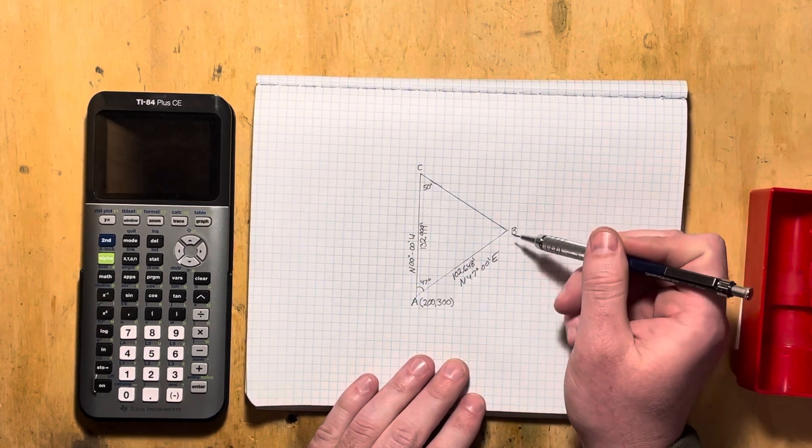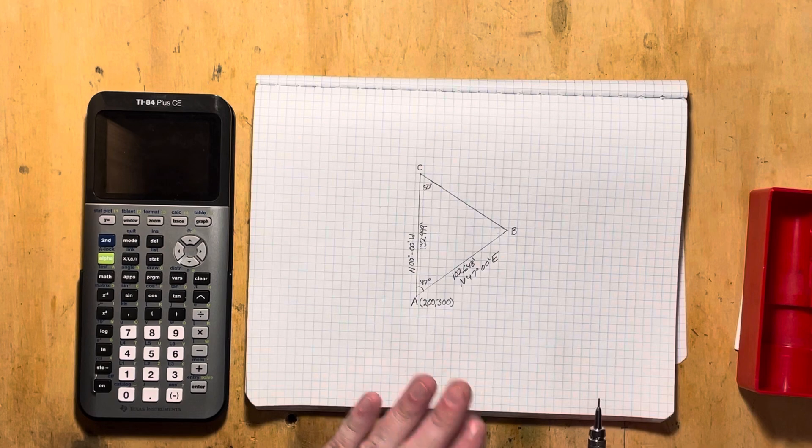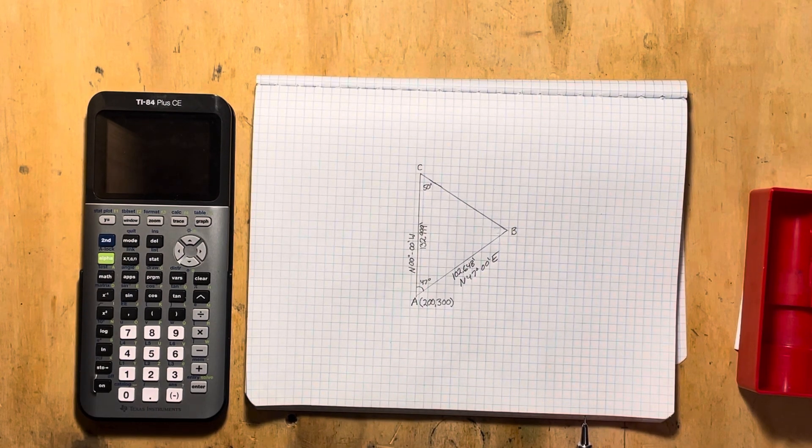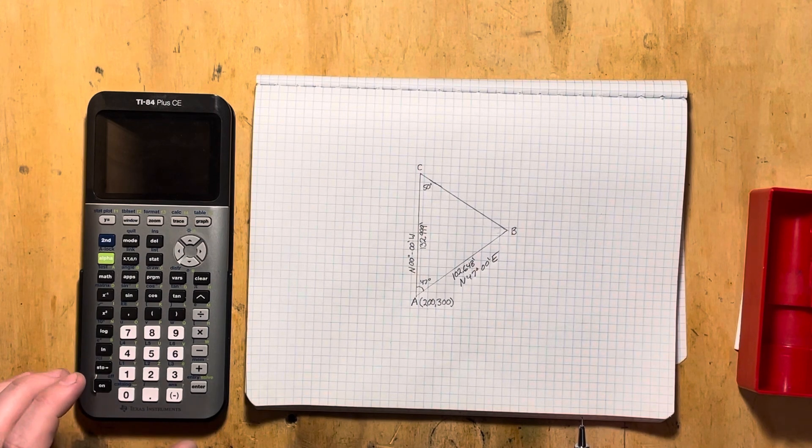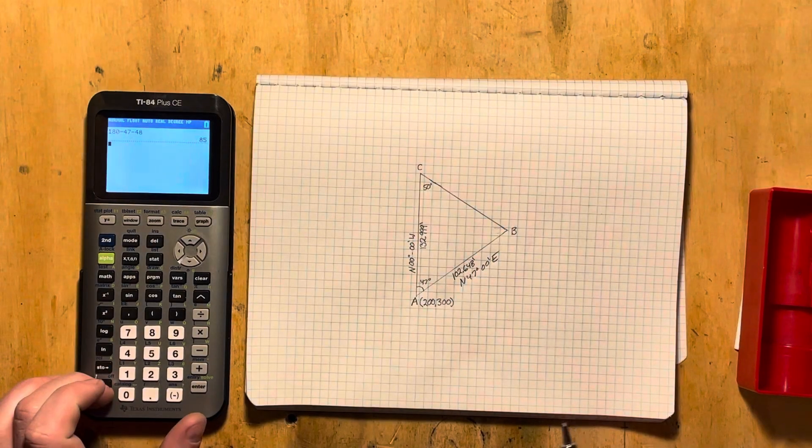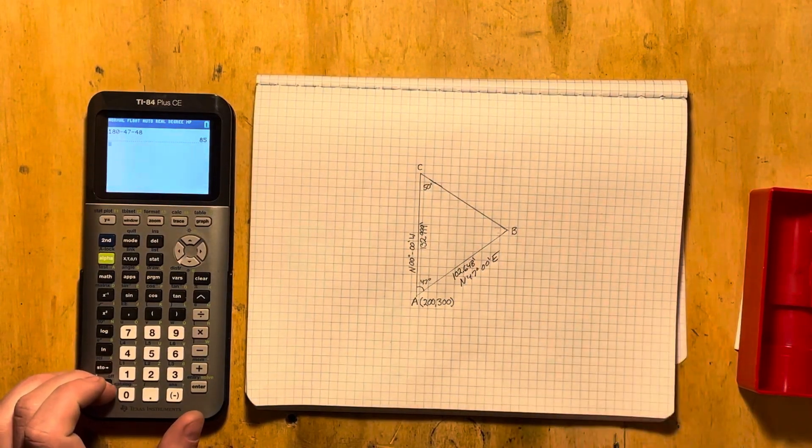Now that doesn't really help us when we get to BC here. So for BC, let's see what we can do about this. First of all, we can go ahead and figure out what this angle is. Might as well solve that.